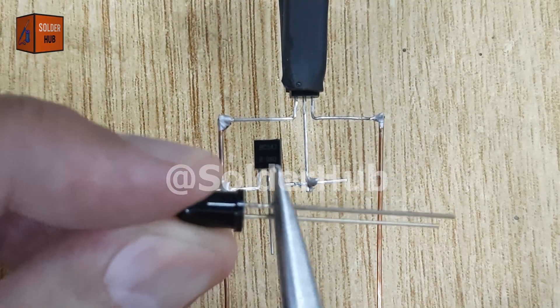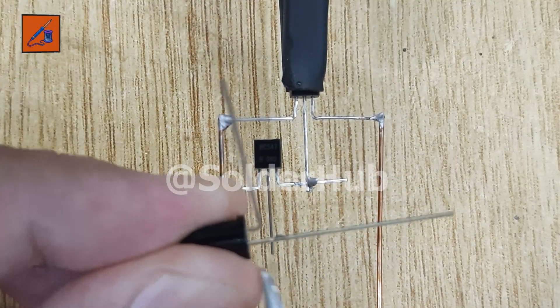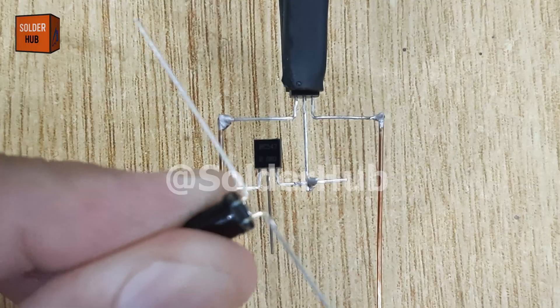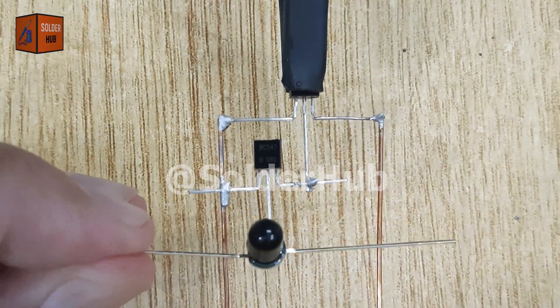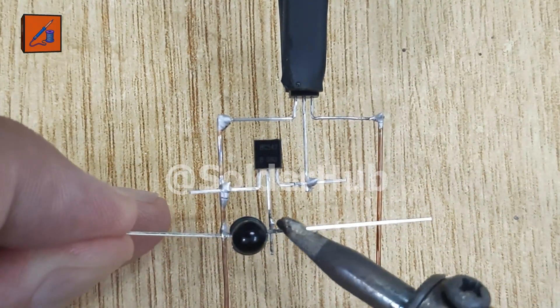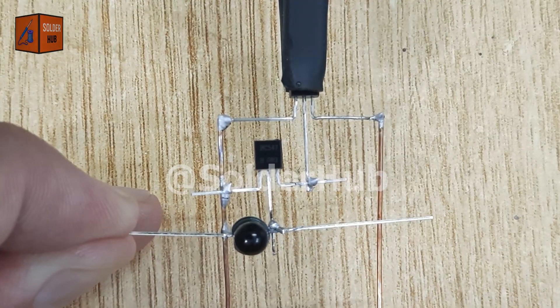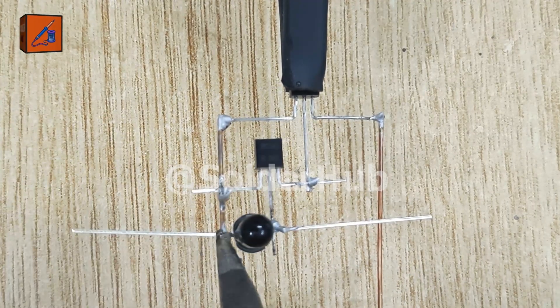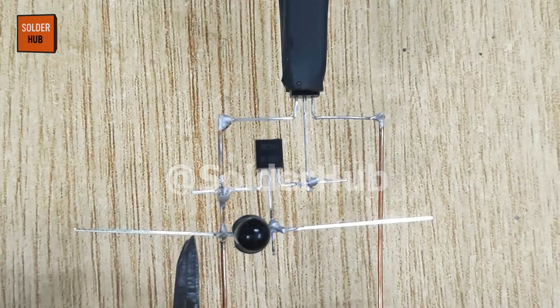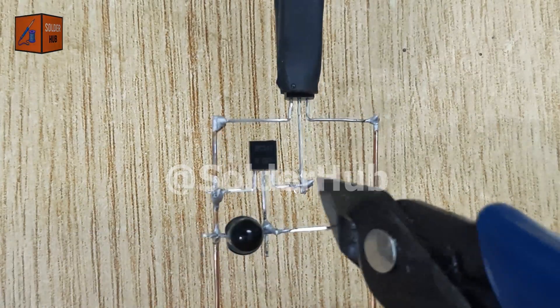Now, this is an IR receiver diode. It detects infrared light. I'll bend both of its pins carefully and solder the positive pin to the base of the second transistor, while the negative pin goes to the same copper wire connected to the collectors of both transistors. This setup allows the IR receiver to control the transistor pair.